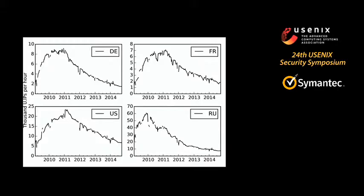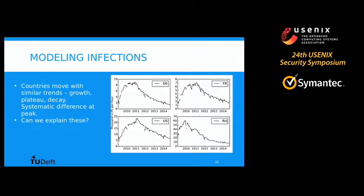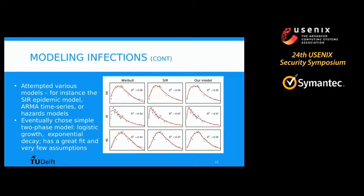As you can see in this graph, we have plotted for Germany, France, US, and Russia the Conficker trends. We can see that the countries move with similar trends — there is a growth, plateau, and decay. There are systematic differences at the peak levels, which is rather interesting. We went through news, media, etc., and you can't directly pinpoint what's causing these downward slopes. We thought of modeling this using various ways. We looked at epidemic models, ARMA autoregressive moving average models, hazard models, etc.